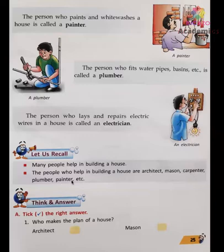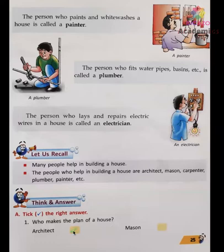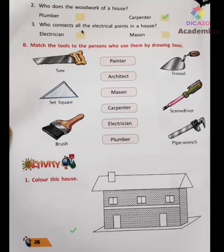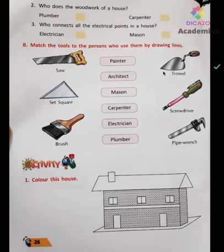Now tick the correct answer. Who makes the plan of a house? — The architect. Who does the woodwork? — The carpenter. And who connects all the electrical points in a house? — The electrician. So these are some persons who do various work for our help.